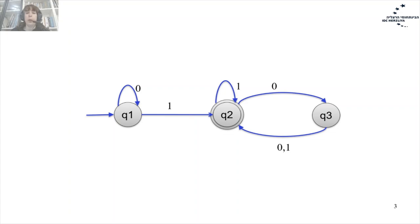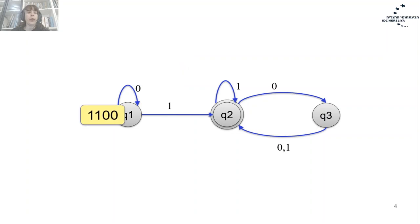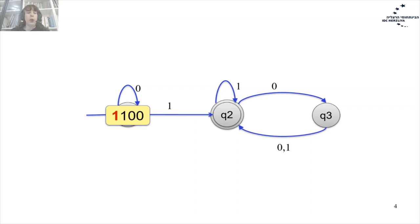If we have 1 at the input, we move to state Q2. Let's check what happens with the word 1100. We want to decide if the word 1100 is accepted by this automaton. We start from state Q1 and we have input 1, so Q1 with input 1 means we move to state Q2.